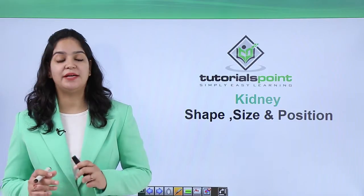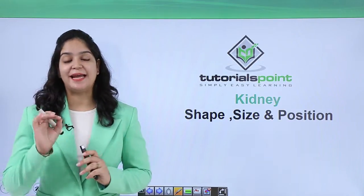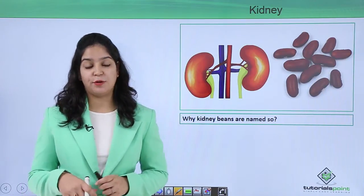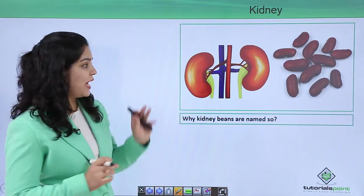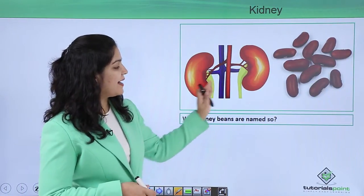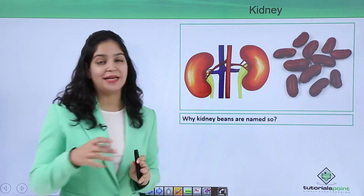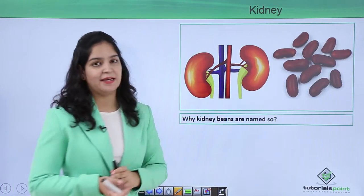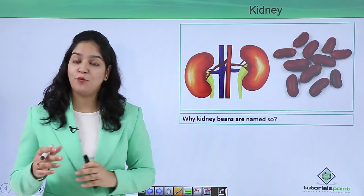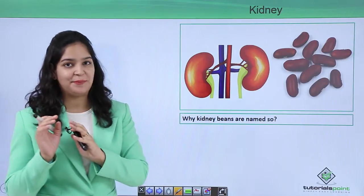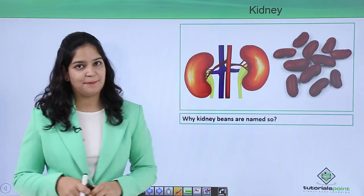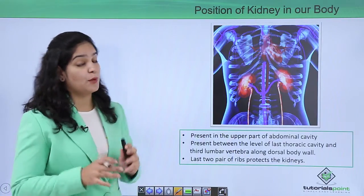Today we are going to learn about the shape, size, and position of the kidneys in our body. Why are kidney beans named so? From childhood, I loved kidney beans and always wondered why. Just look at the picture — kidney beans look just like our kidneys in shape and color, obviously not in size. Now we know why our favorite kidney beans are called kidney beans!